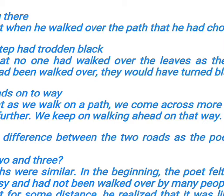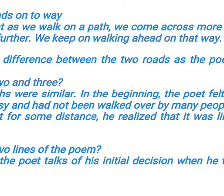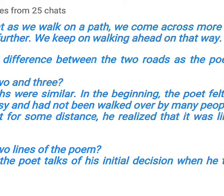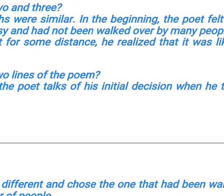Is there any difference between the two roads as the poet describes them? In stanzas two and three, the two paths were similar in the beginning. The poet felt one was grassy and one was clear — he could see as far as it bent into the undergrowth. But when he walked some distance he realized it was like the other road. In the last two lines this same idea is mentioned again.